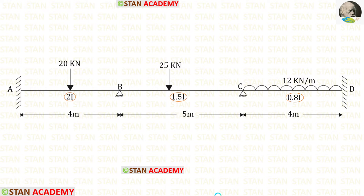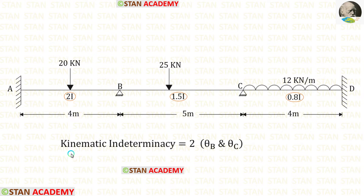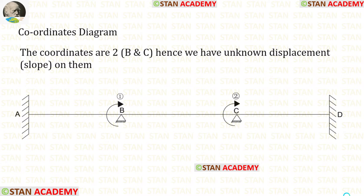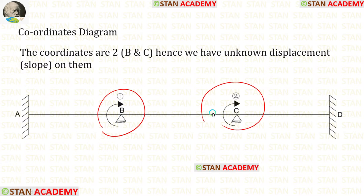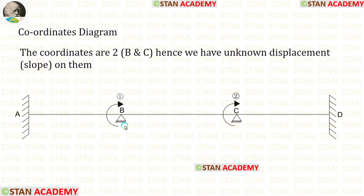In the stiffness matrix method, we check the number of supports where slope can occur. In fixed supports there is no slope, but in hinged and roller supports there will be slope. In this beam, at points B and C there are hinged supports, so the kinematic indeterminacy is 2. We have slope θB at point B and slope θC at point C. We now make the coordinates diagram with two coordinates at points B and C, representing the moments placed in the clockwise direction.